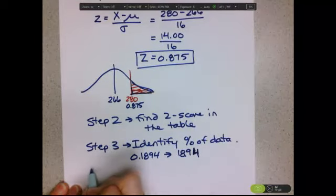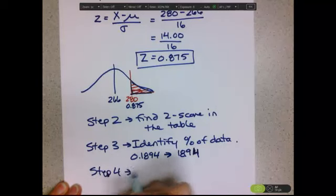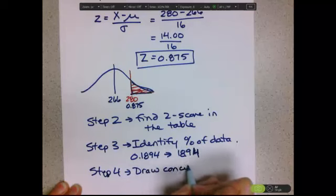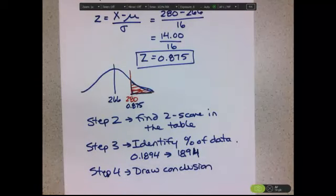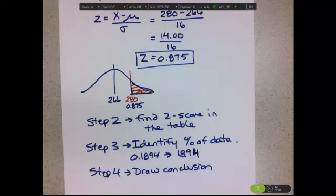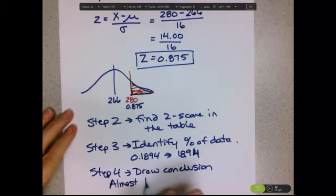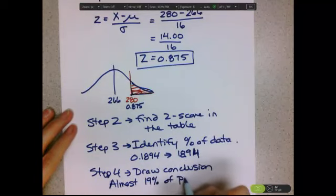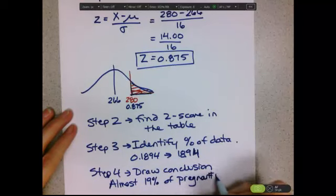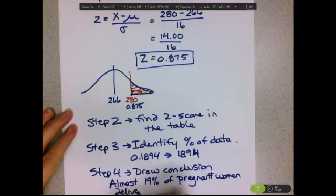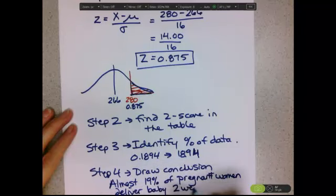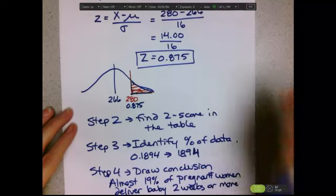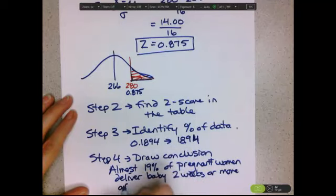Our fourth step here is to draw our conclusion. The conclusion that we would draw here would be to say that almost 19% of pregnant women deliver their baby two weeks or more later than the average length of pregnancy. Our conclusion is that almost 19% of pregnant women deliver their baby two weeks or more after the average delivery date.